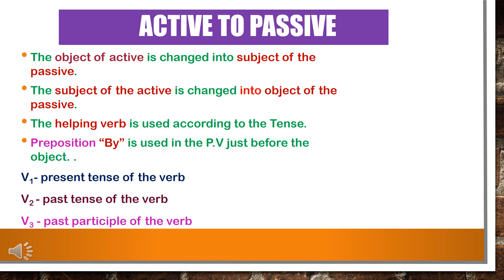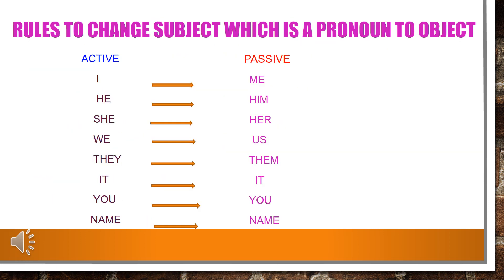Now we will see what is V1, V2 and V3. V1 is the present tense of the verb. V2 is the past tense of the verb. V3 is the past participle of the verb.